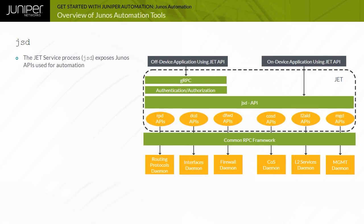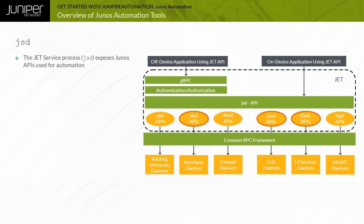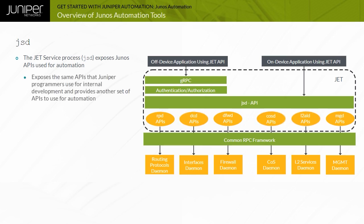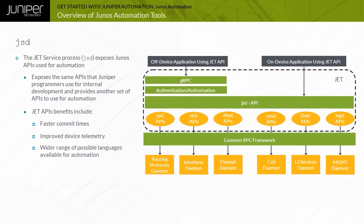An additional automation process available in Junos is called the JET Service Process or JSD. The JSD process aggregates the individual APIs belonging to the Routing Protocol Daemon or RPD, the Firewall Filter Daemon or DFWD, and other Junos processes, and exposes those APIs with a consistent look and feel. It exposes the same APIs that Juniper programmers use for internal development and provides another set of APIs for automation. Remote procedure calls that utilize JSD are transported using the GRPC protocol instead of NETCONF. Benefits of the JET APIs include faster commit times, improved device telemetry, and a wider range of possible languages available for automation.